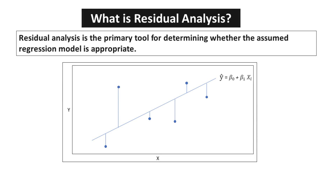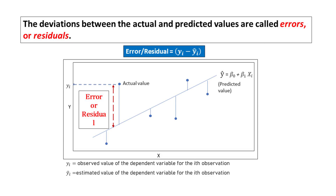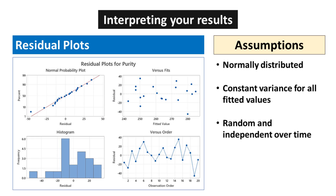Residual analysis is the primary tool for determining whether the assumed regression model is appropriate. The deviations between the actual and predicted values are called errors, or residuals. To confirm that the analysis is valid, verify all assumptions about the model error term. Use residual plots to check that errors are normally distributed, have constant variance for all fitted values, and are random and independent over time.